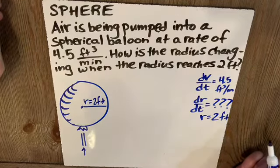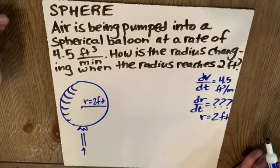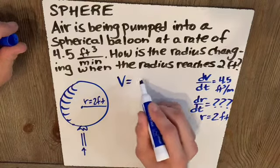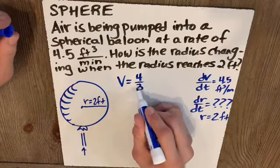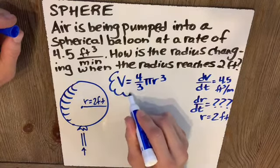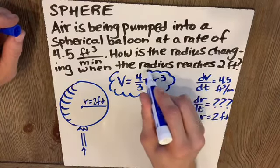So the key information is how is volume related to radius? Well, the volume of a sphere is 4 thirds pi r cubed. That's our key equation that links the two of them.